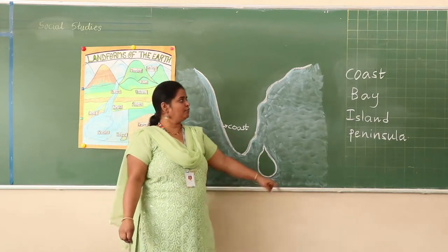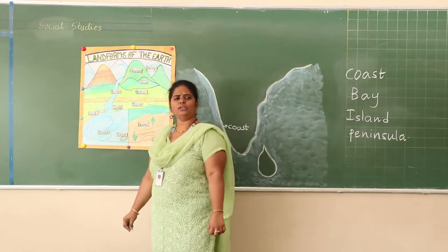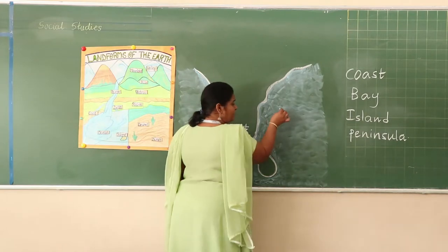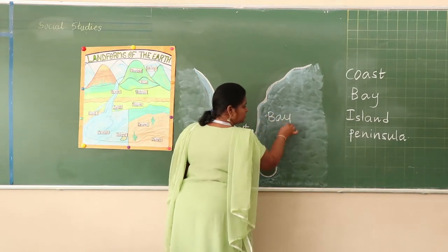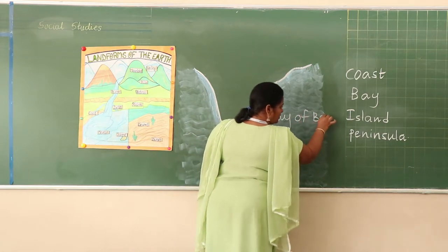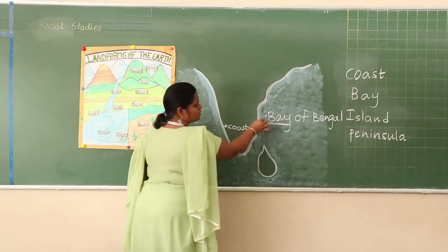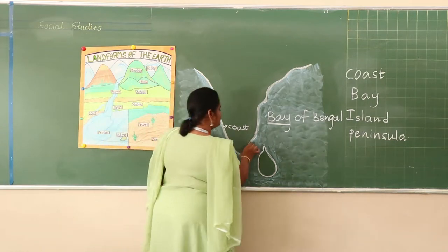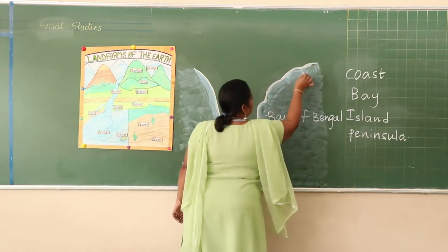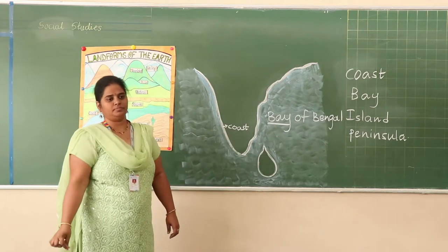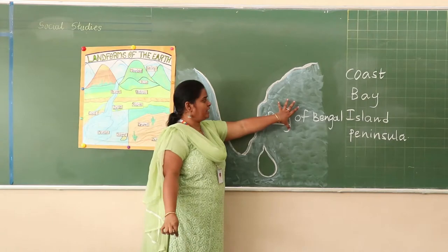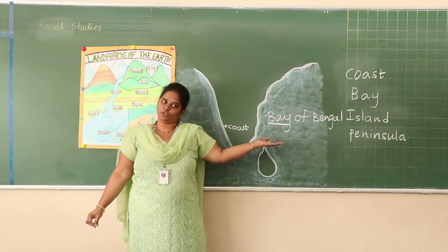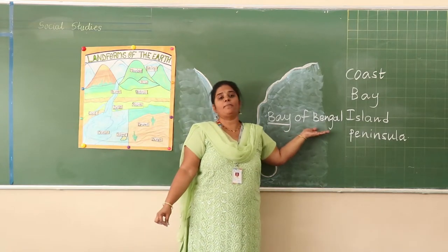Now we will learn about bay. What is a bay? Why is it called a bay? The landmass here is surrounded with water. The water body surrounded with three sides of land is called a bay. That is why it is named the Bay of Bengal.